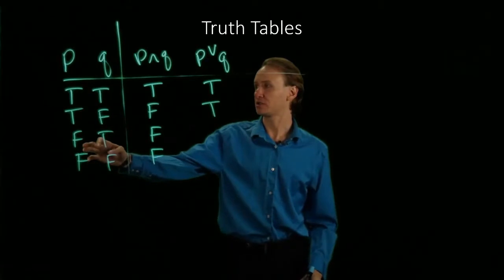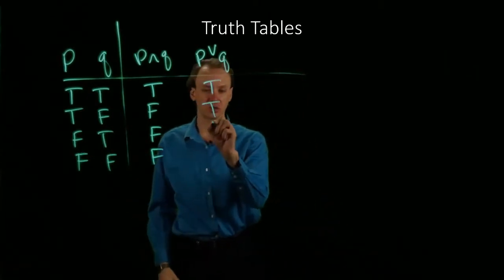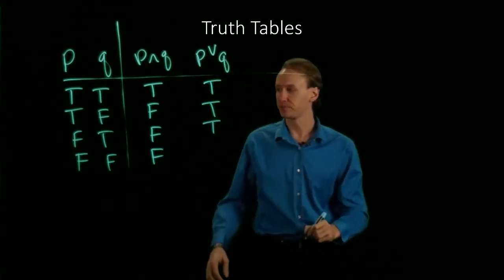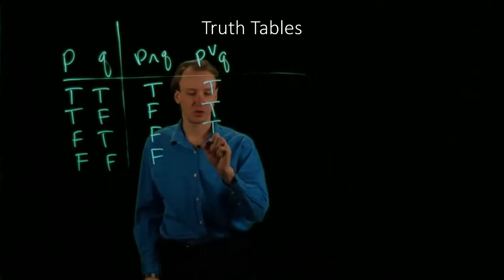When P is false and Q is true, Q is still true, so the OR of both of those is true. But when both P and Q are false, the OR is false.